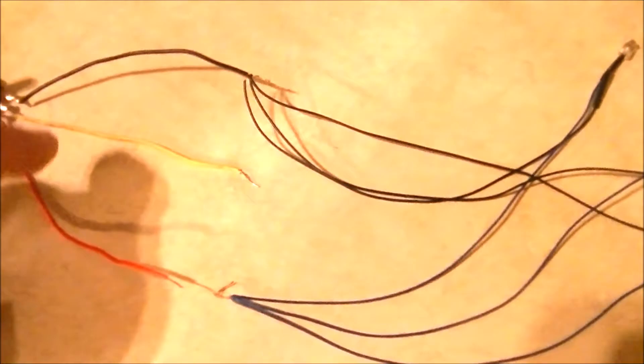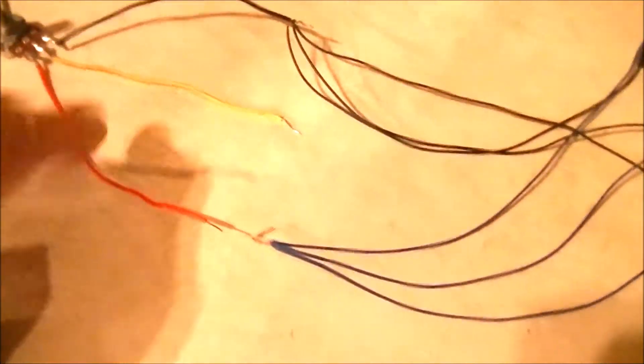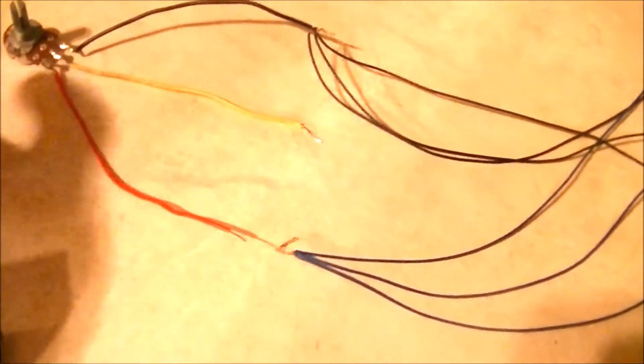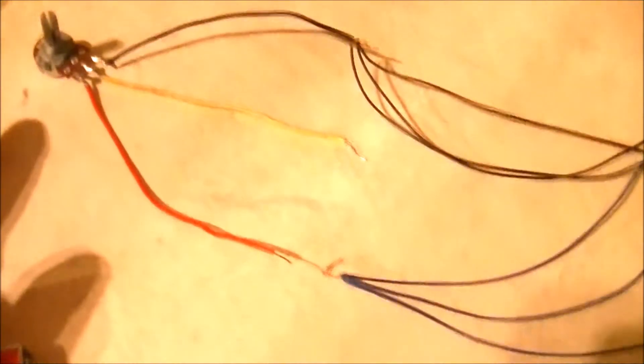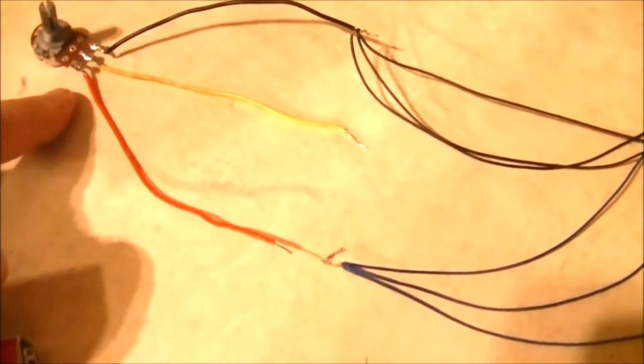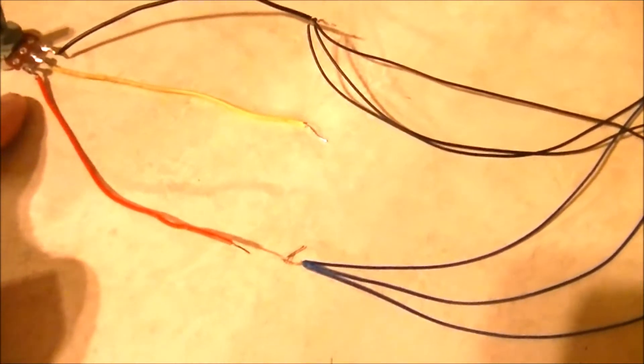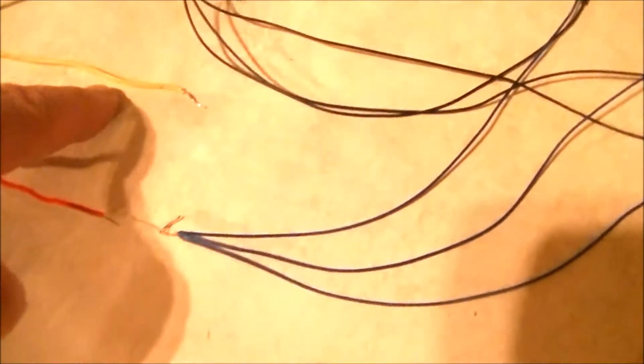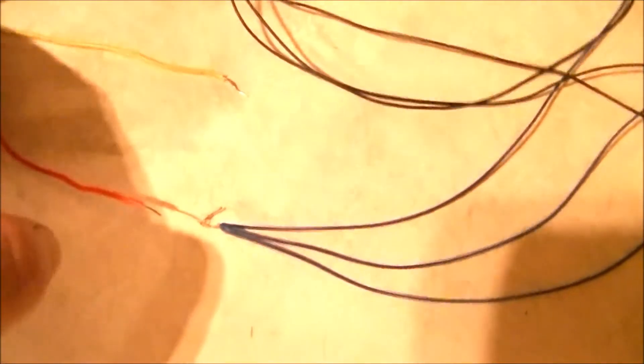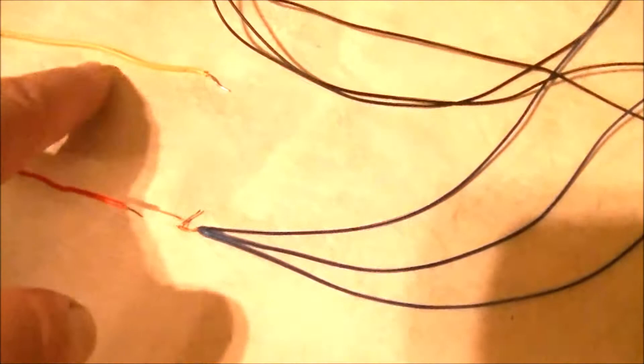You have one leg, two legs, three legs coming off these three taps of this potentiometer. Either one of these can be the power in, and the yellow one, the center one, can be the power out.